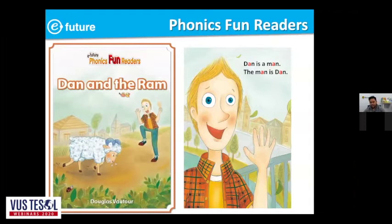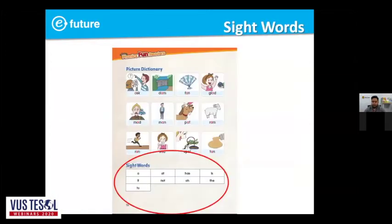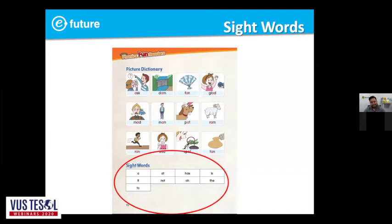For example, 'Dan is a man. The man is Dan.' We're practicing the short-a target, putting it into the context of a story with repetition of the phonics target. Also giving a list of sight words — those words you want students to read automatically without having to break down and decode. If you see the word 'a,' you don't have to spend too much time decoding it. These become more automatic for students over time. A picture dictionary is another way to present vocabulary through visual aids.